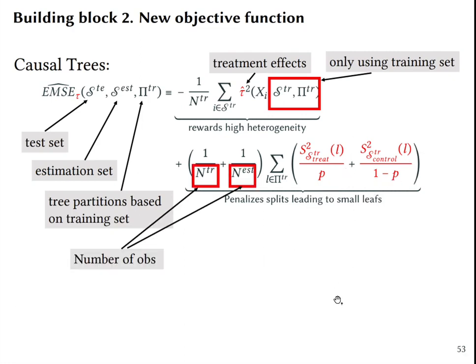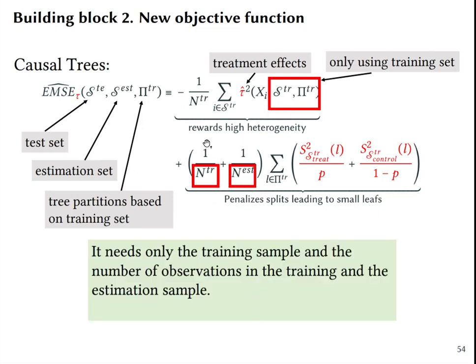And finally, it makes use of number of observations. We need to know the number of observations in the training set and in the estimation set. So the whole formula allows you to minimize this objective function by only training on the training sample and knowing the number of observations in the training and the estimation sample. As you can see, you do not need to use anything from the estimation sample in order to decide how to split the causal tree.